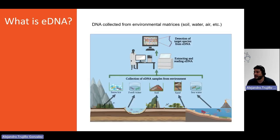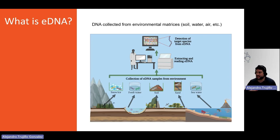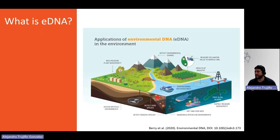eDNA is simply DNA collected from environmental matrices. It can be done from soil, from water, from air. There are multiple methods and multiple ways in which eDNA can be captured from the environment. The capacity we have in doing so is that we're able to extract and analyze this eDNA, which can then give us information on the presence or absence of a species in a given environment. This has blown up in the amount of applications and capacity that this kind of technology can allow you to do.